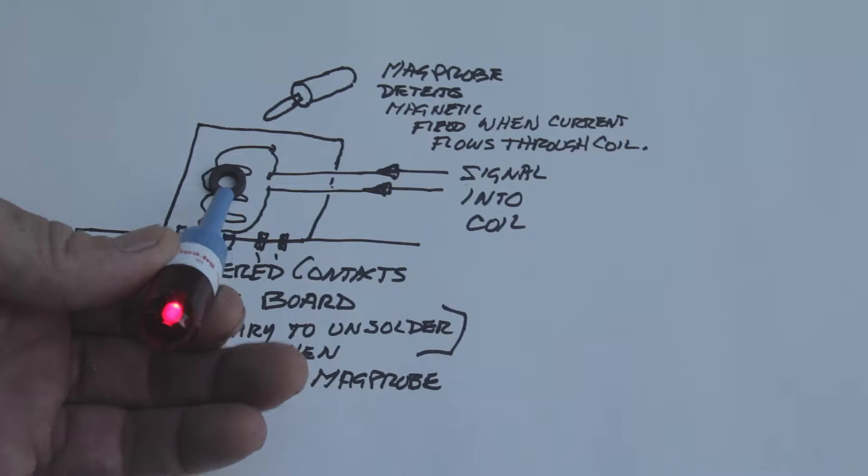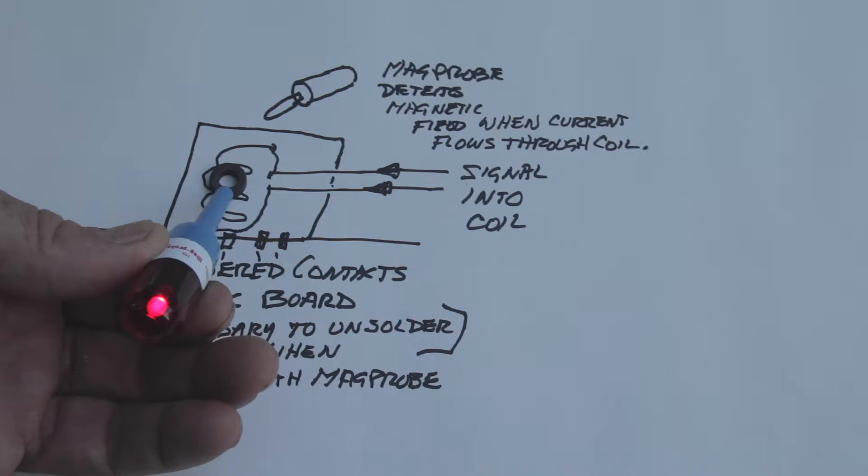Instantly, the minute that it detects the magnetic field around the coil, you know that you have voltage, current, and continuity.